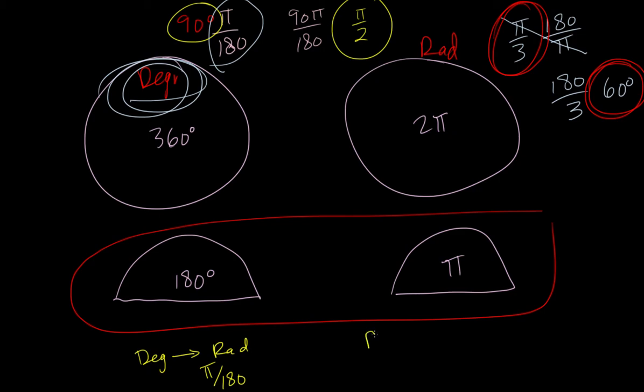If we're going from radians to degrees, we're going to multiply by 180 over π. And the way I remember that is I'm trying to cancel the π that's probably already in the problem, like right here.